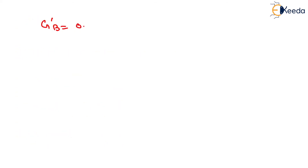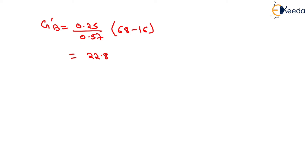Similarly, G'B equals (0.25 divided by 0.57) multiplied by (68 minus 16). Solving this gives 22.80, which is approximately 23 seconds. That is the value of G'B.